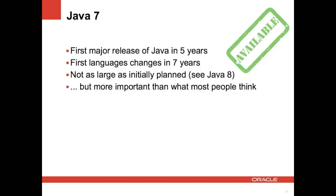Moving on to Java 7 — it is available, and this is an important milestone release. This is the first major release of Java in five years, and it's also the first release that sees language changes since Java 5, which was released seven years ago. Of course, it's not as large as initially planned — things like modularity, closures, or lambda expressions are not in Java 7. They are slated for Java 8, which is meant to be released in late 2012.